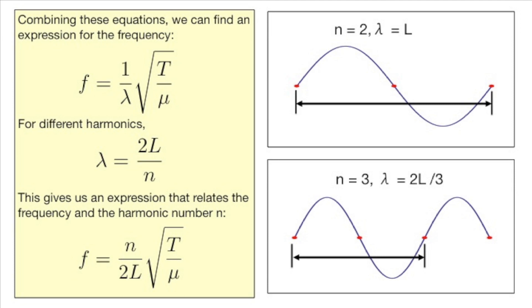Combining our earlier equations for the velocity of waves on a string, we find that the frequency is equal to 1 over the wavelength times the square root of the tension over the mass per unit length. For each harmonic, the wavelength is equal to 2 times the length of the string divided by n.